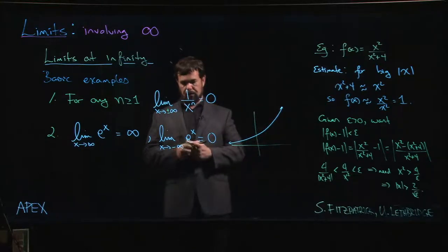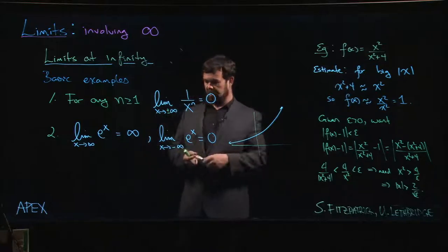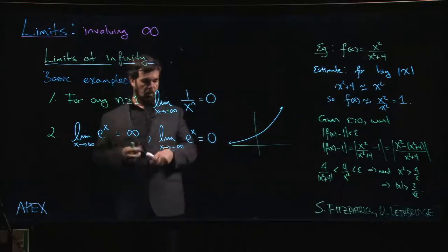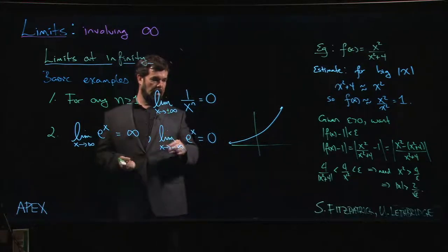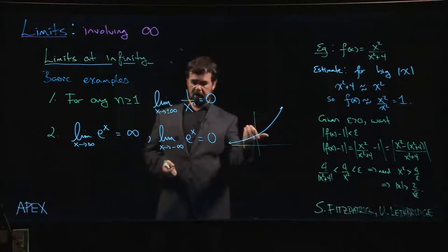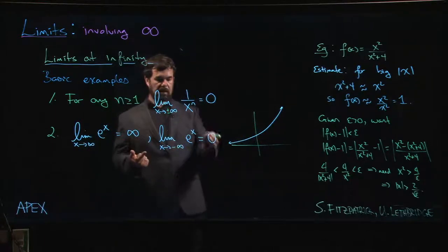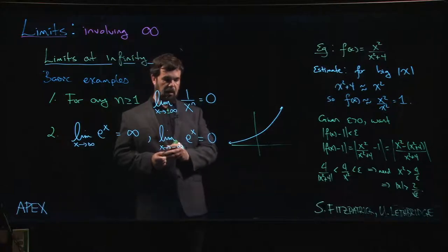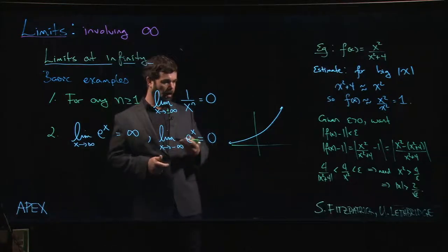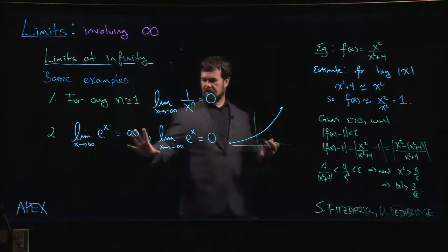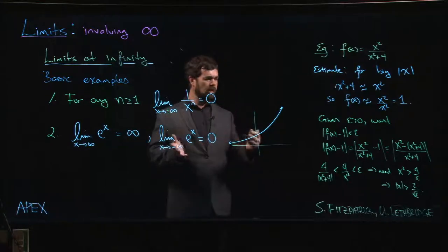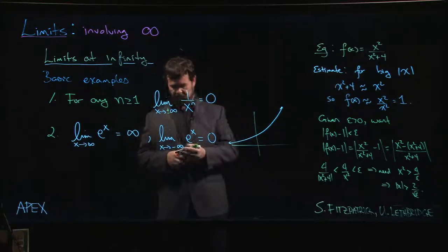If the base is between 0 and 1, that's kind of the same thing as having e to the minus x, in which case this is just flipped. Then it's going to be the limit at plus infinity that's 0 and the limit at minus infinity that is infinite. So if you know these, you can deal with just about every limit involving infinity.